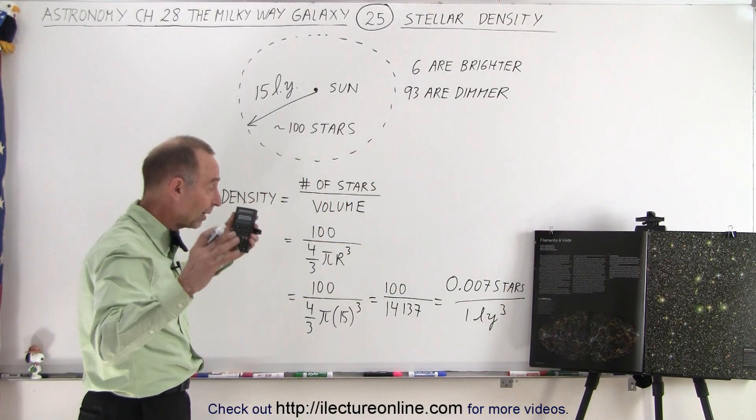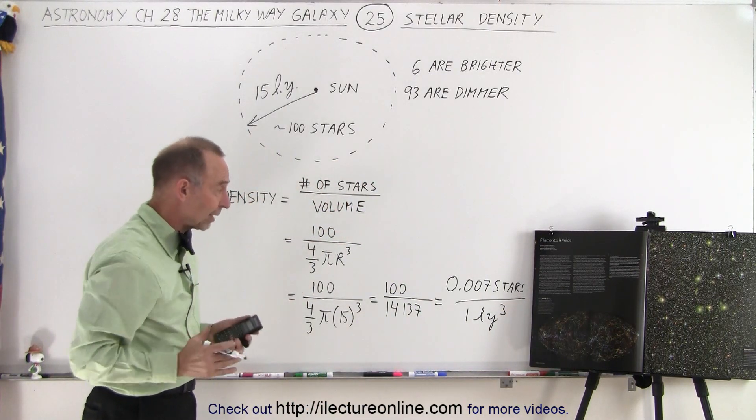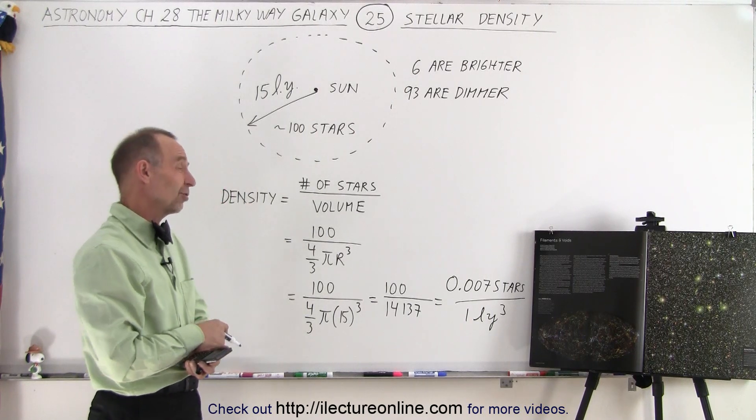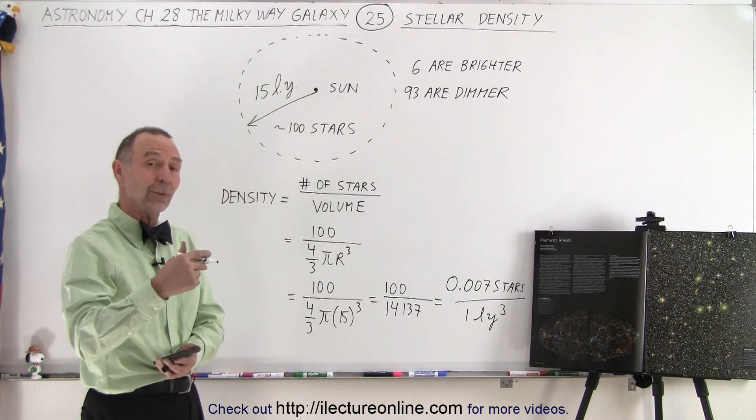So if you take a cube of one light year by its side, so one cubic light year, you only have 0.007 stars. That's not very many stars. How about the other way around?